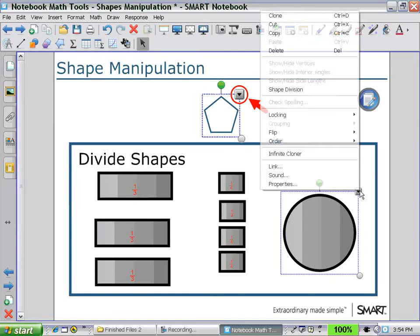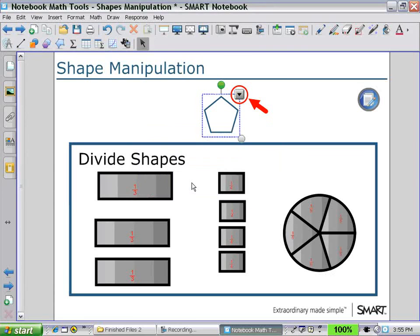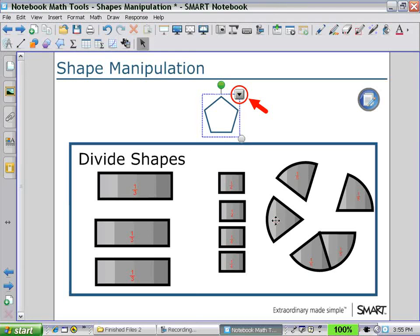And lastly, the circle. In this shape division, we could select a cut of five pieces, and there the students see the size of one-fifth of the circle.